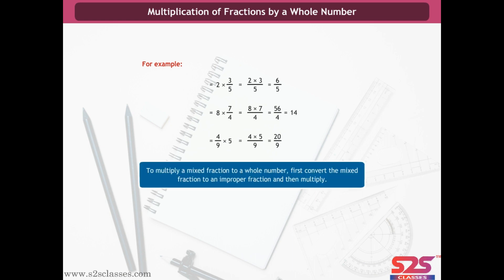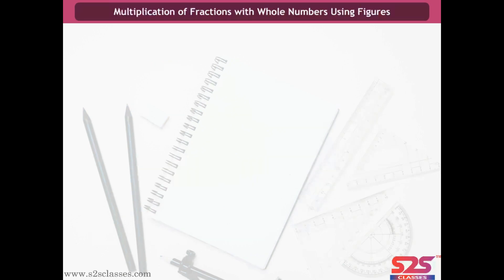To multiply a mixed fraction by a whole number, first convert the mixed fraction to an improper fraction, and then multiply. For example, 3 and 1/5 × 2 = 16/5 × 2 = 32/5.